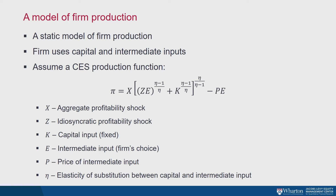This is a static model for simplicity — we'll add dynamics later. It's very conventional, with nothing unusual in terms of building blocks. The firm uses two types of inputs: capital input K and intermediate inputs E, which we can composite. Capital is fixed for the purposes of the static model. Intermediate inputs can be adjusted by the firm depending on how much production they want to do, and they can be bought at market price P, which is exogenous to the firm but endogenous to the economy. Firms take P as given.